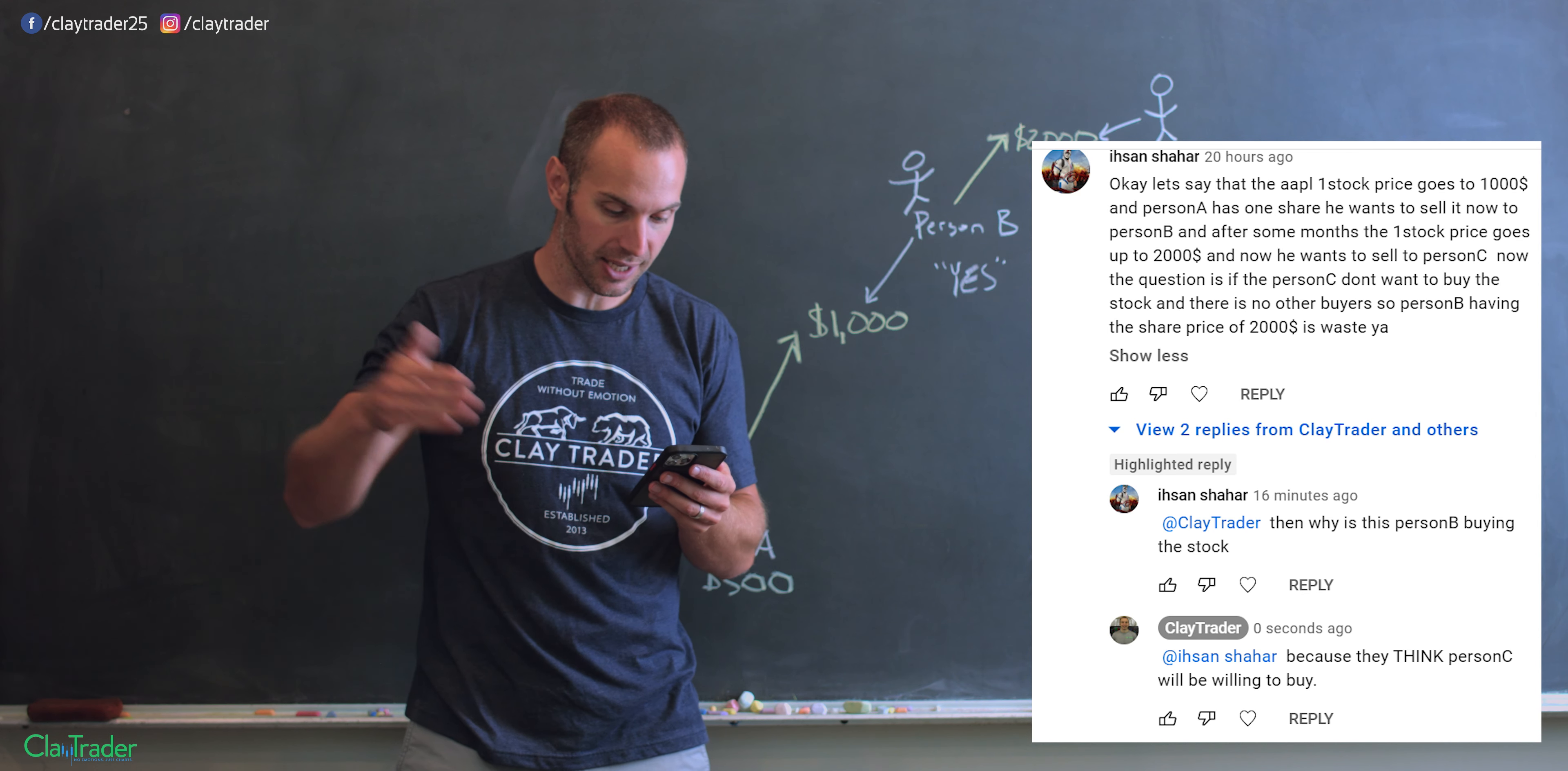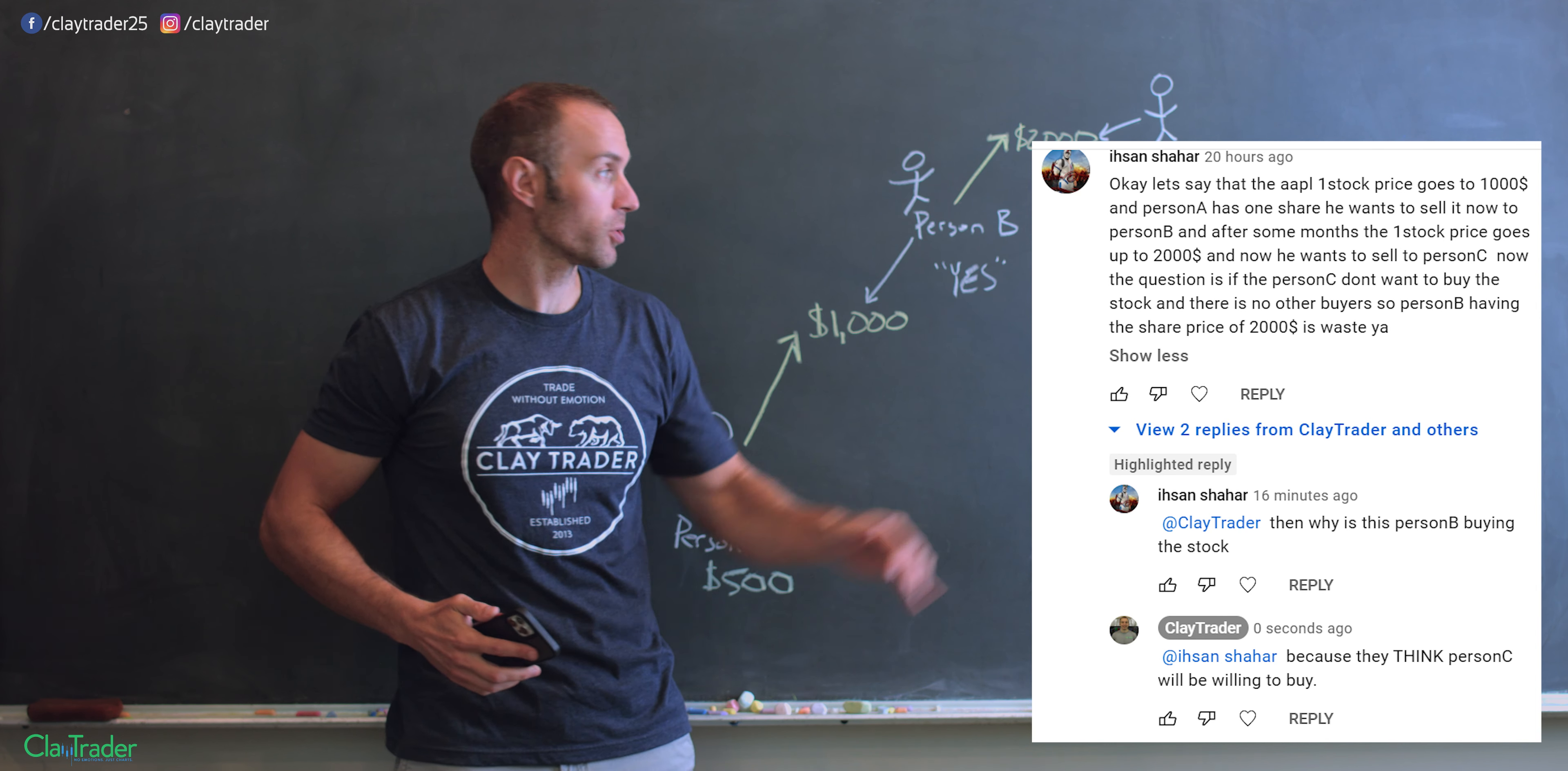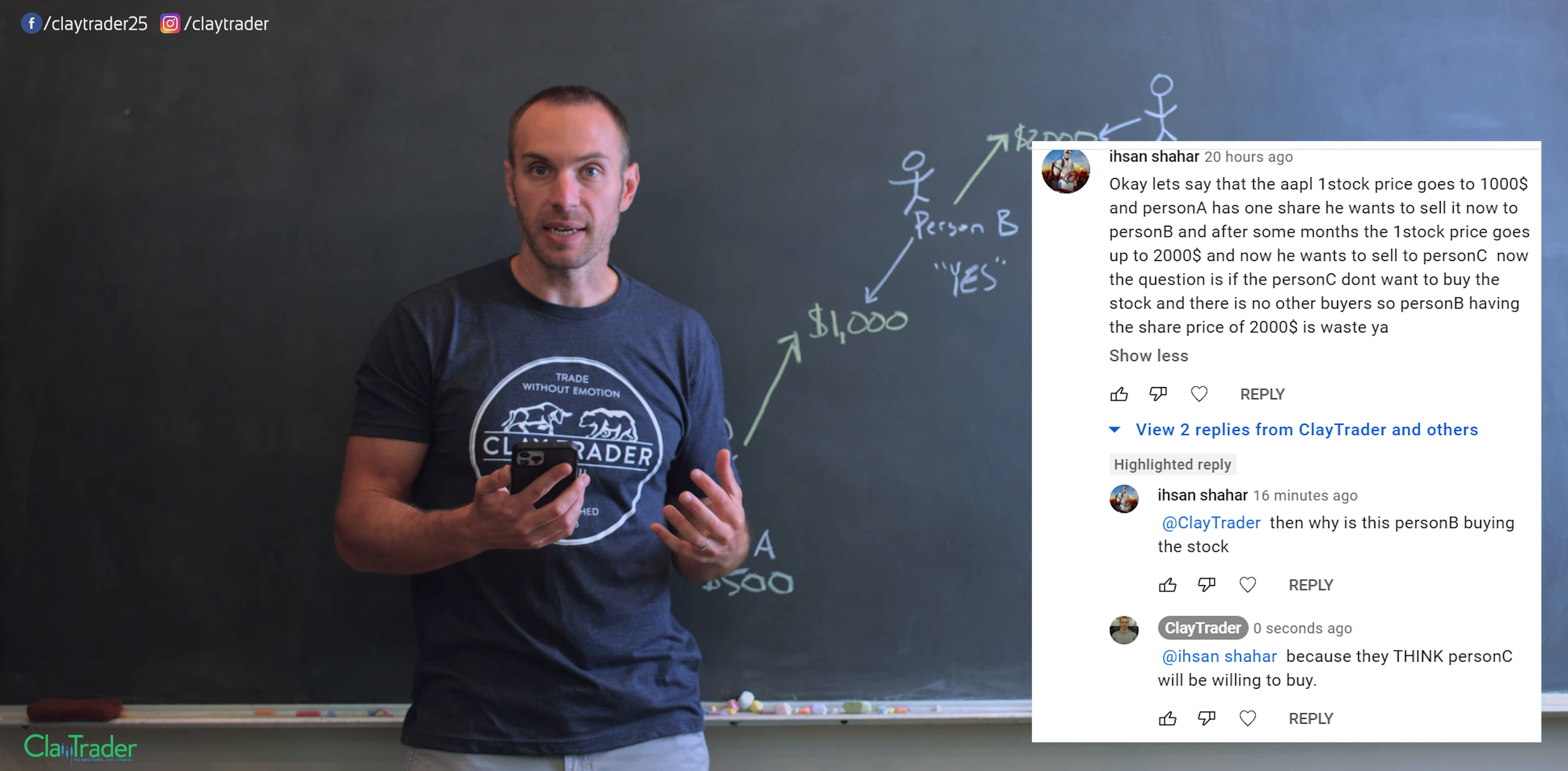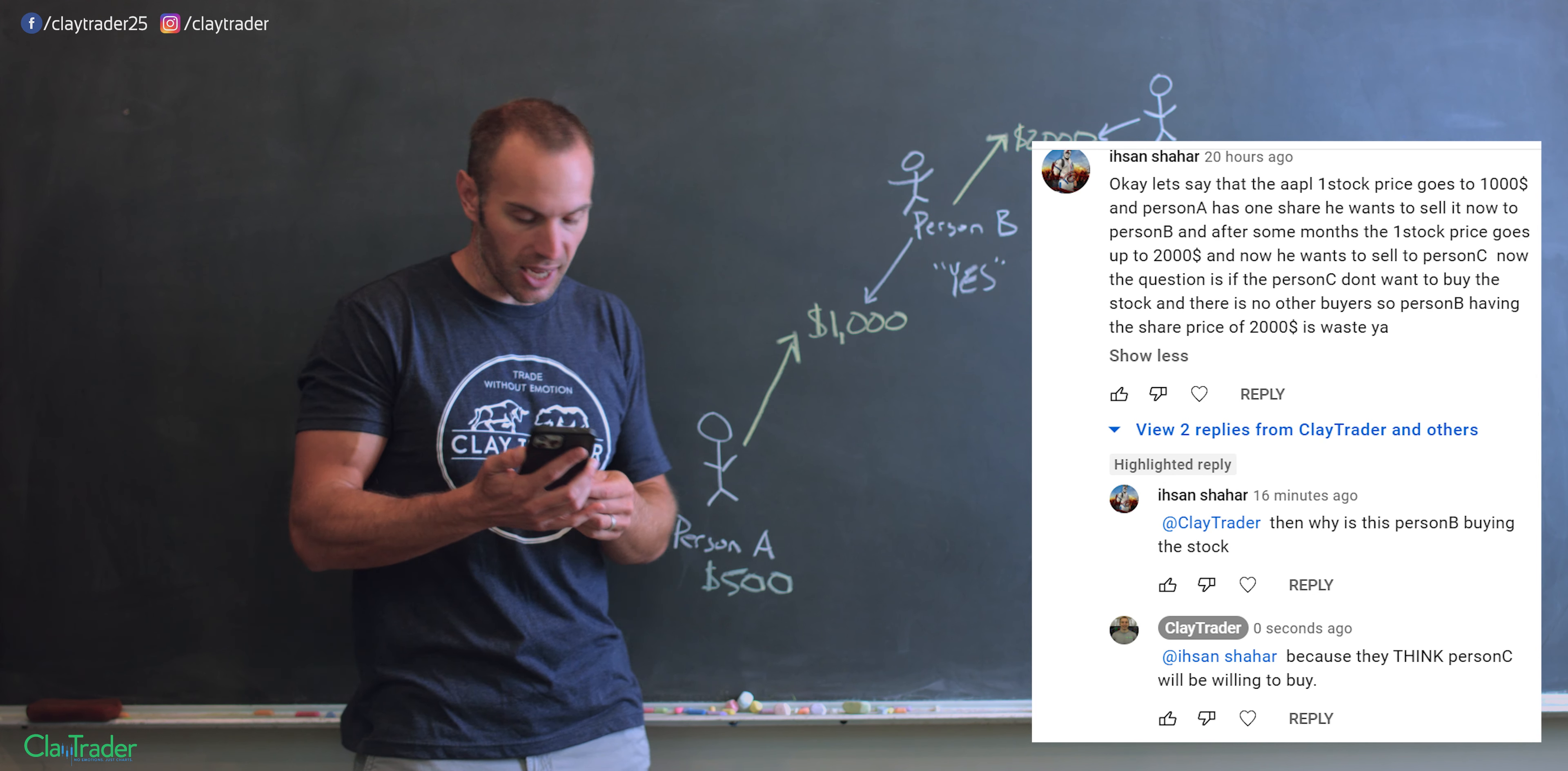But then this person carries on and says, okay, well, let's say that person B wants to now sell what they bought for $1,000, but they wanna sell it for $2,000. And you have person C come along. The question becomes, okay, and this person says, okay, well, why would person B be buying? So if person B is buying for $1,000, as you can see down there in that secondary comment, then why is person B buying the stock?